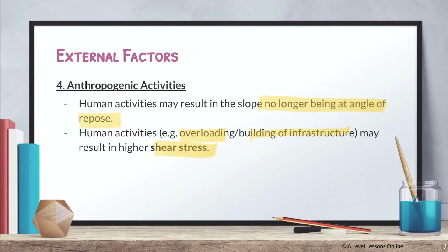Human activities are a huge external factor and the only one that could really counter climate in an argument. However, if you want to justify that climate is still more important, state clearly that climate is a macro factor whereas human activities can always be averted — we can avoid piling things onto the slope to prevent it from reaching a critical angle of repose or a failed factor of safety.